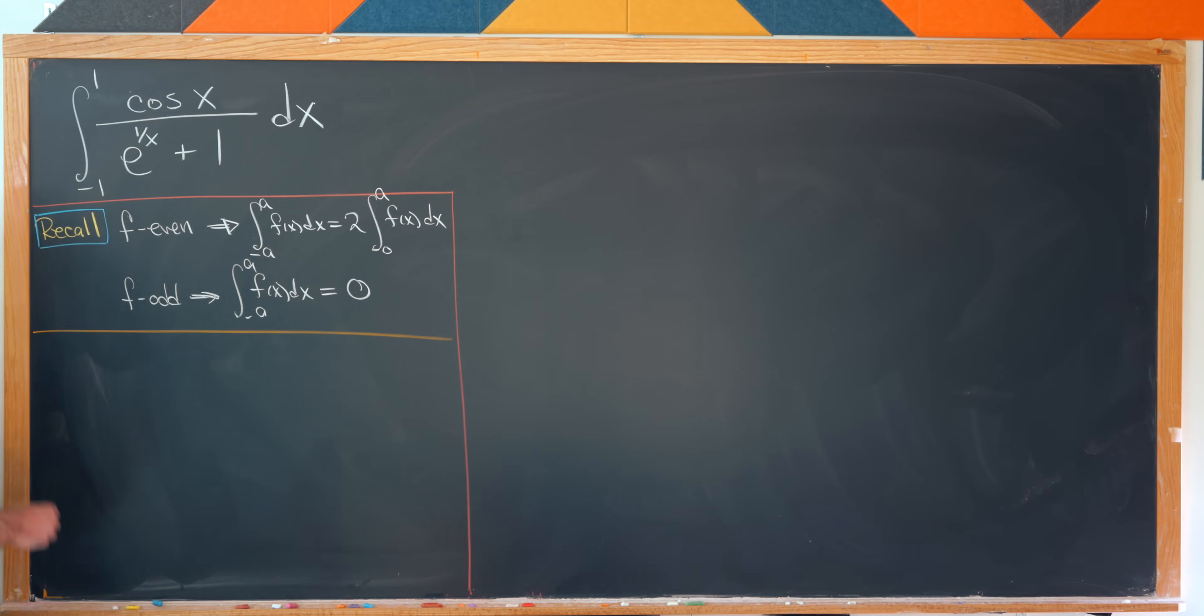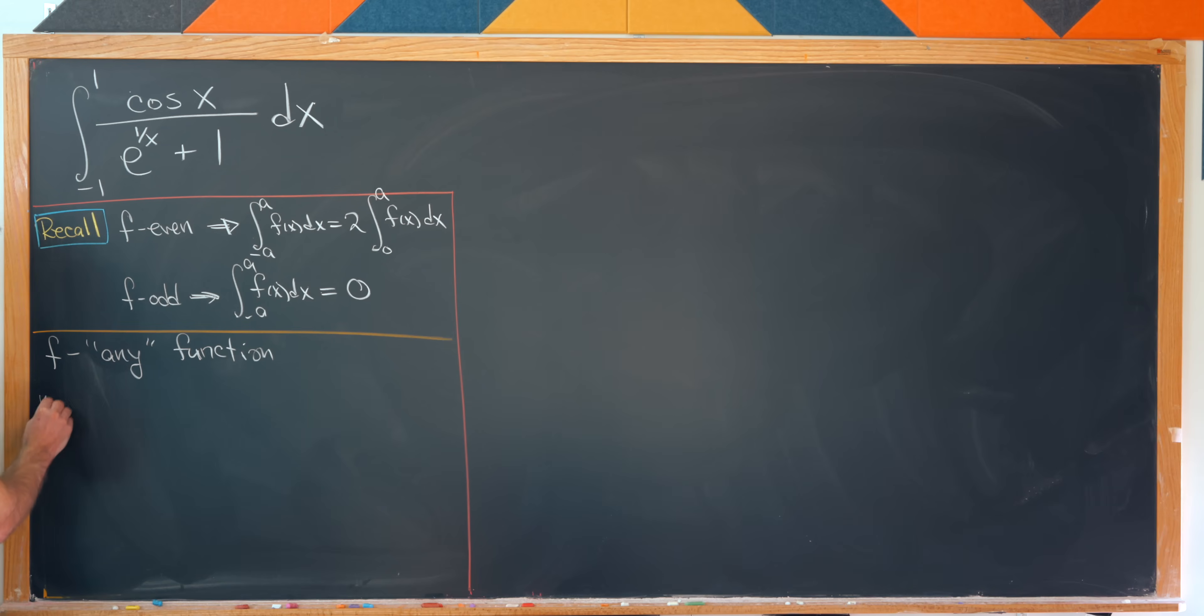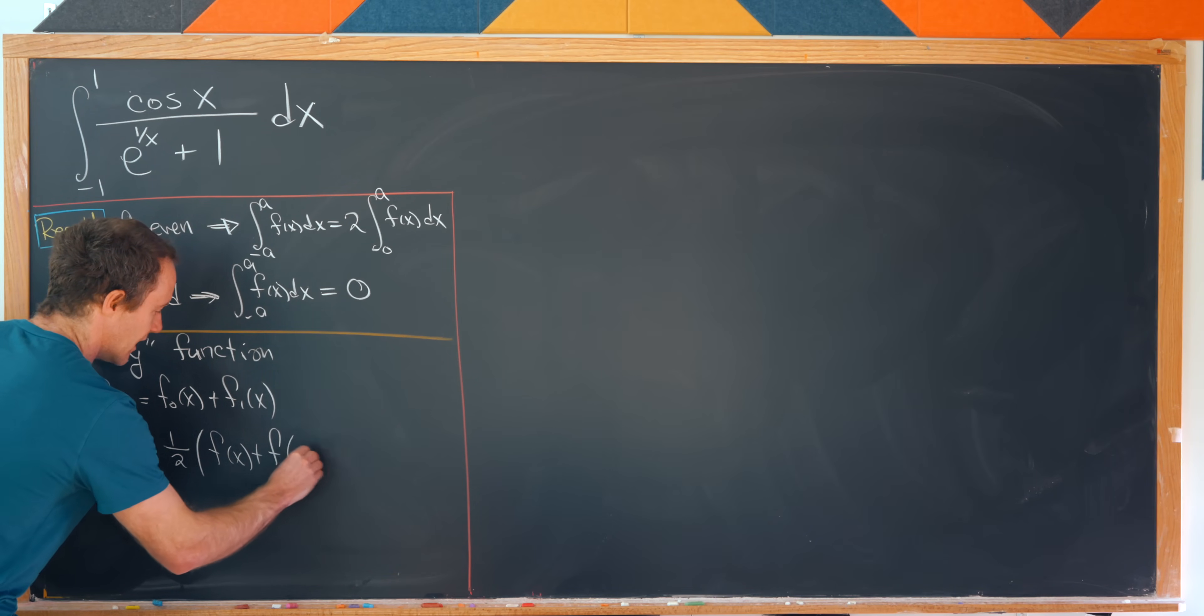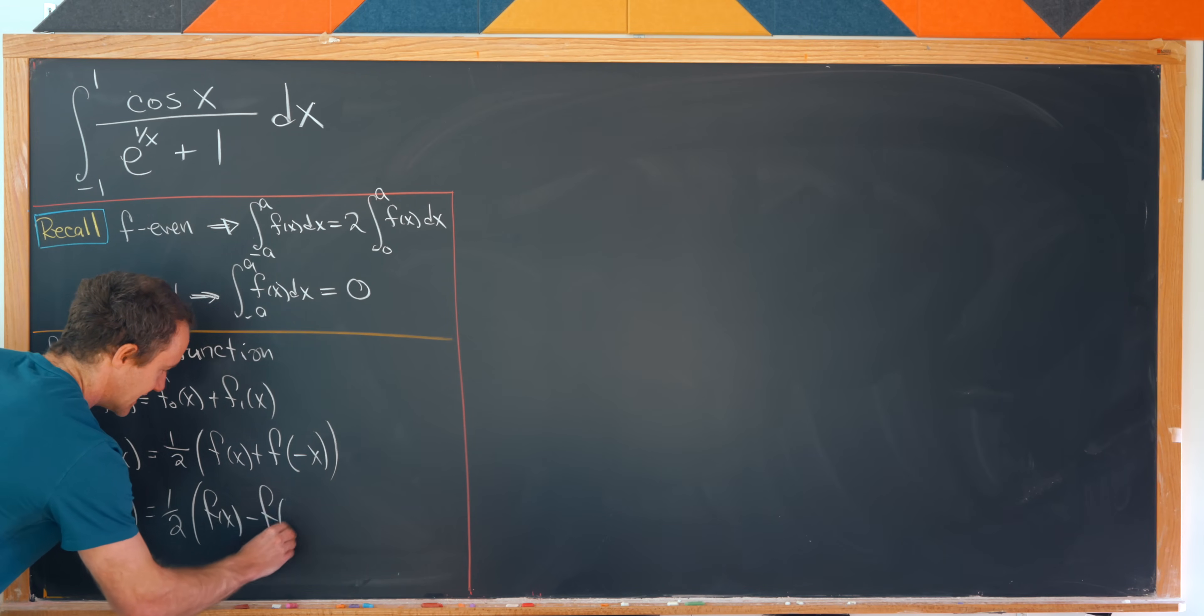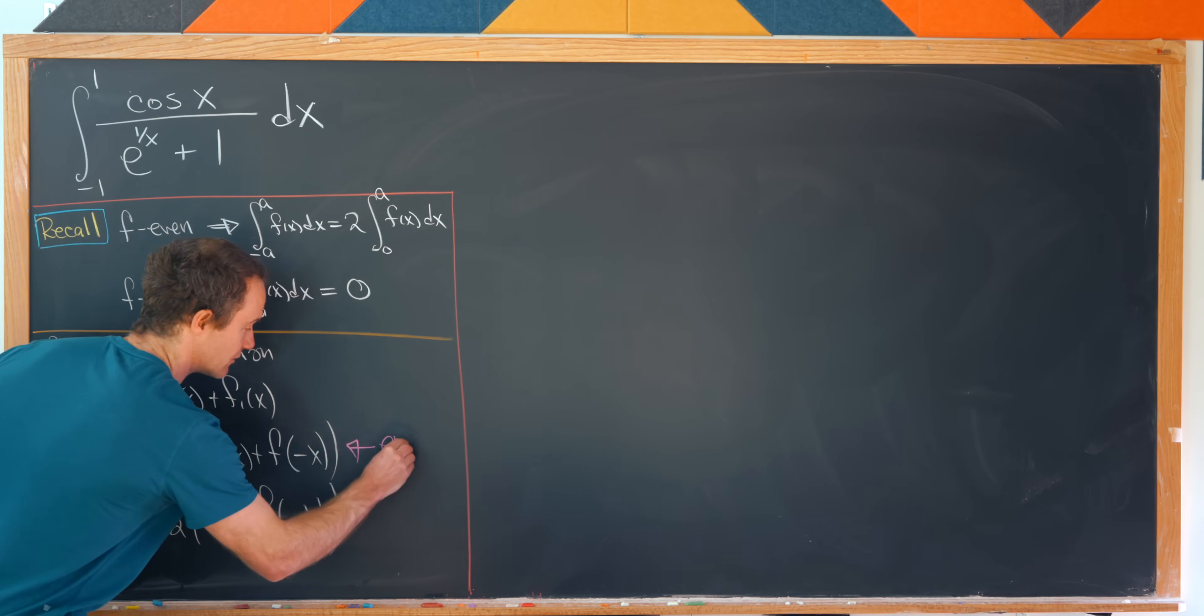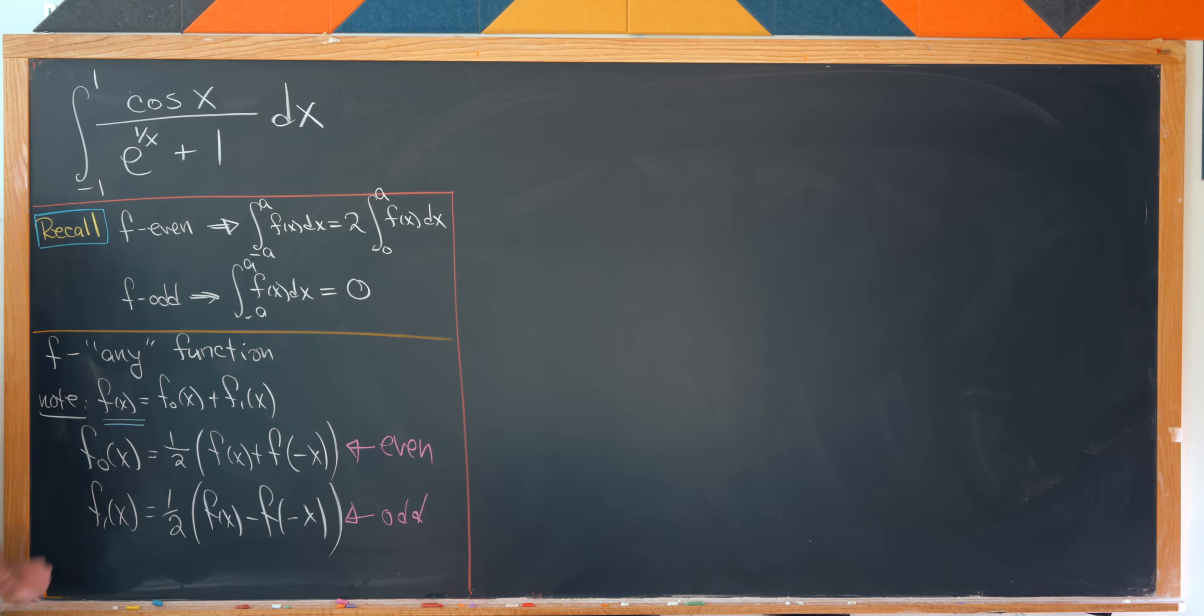Okay. So let's see how this might work. So let's take F to be any function, and really it's just any function where it's nice enough to do this action. And now let's notice that we can write F of X as F zero of X plus F one of X, where F zero of X is equal to one half times F of X plus F of minus X. And then F one X is equal to one half times F of X minus F of minus X. And let's notice that just simply by construction here, this F zero of X is even, whereas this F one of X is odd. So what we did is took an arbitrary function F of X and we decomposed it into an even part and an odd part.